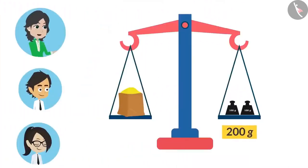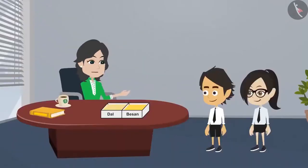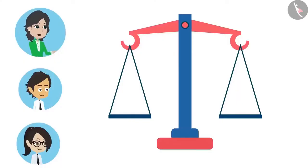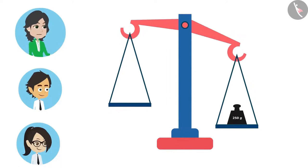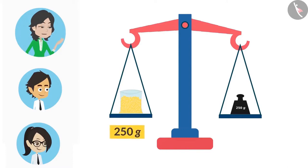The weight of this dal is 500 grams. Now to divide this into two equal parts, we will measure 250 grams. For this, we will keep the 250-gram weight on one side of the scale and keep adding dal on the other side until both sides are balanced. Now there is 250 grams of dal on one side of the scale. In this way, we can divide solid objects into equal halves.